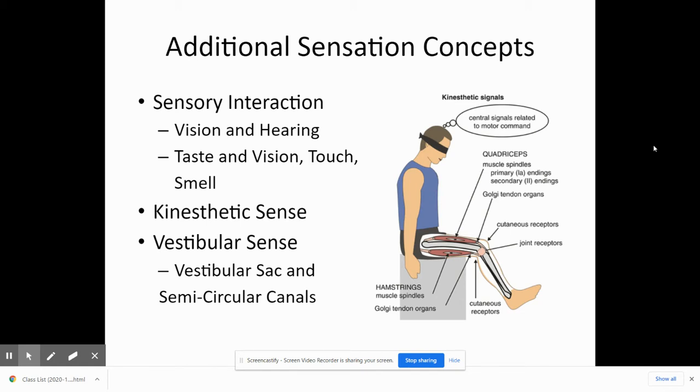Taste is a sense that certainly uses other senses to enhance it. While certainly we have different taste receptors within our tongue, much of what we taste is due to our sense of smell. Smell contributes close to 75% of the sensations or the flavors of what we taste. Additionally, vision can influence how we taste something by creating a sense of expectation. If it looks really good, we're going to want to eat it more. And additionally, touch also creates a better taste, and that can certainly be discussed when people don't like certain foods due to it having a certain texture. So it can affect a person's ability to taste.